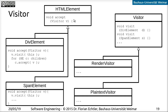One addition worth mentioning: sometimes the accept method is split into an enter and an exit method. This is especially helpful if you want to keep track of where you are in the hierarchy — how deep or at which level in the tree you are. The enter method is called before you process an object, and the exit method is called when you leave it, both with the visitor object.